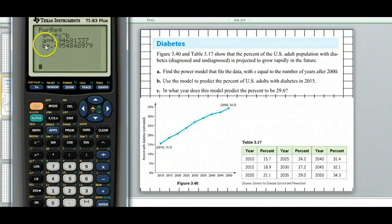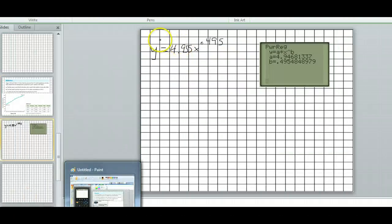So I'm going to put this on the next screen. If I'm going to do it to three places, this should be 4.947x to the, this is a decimal point, .495, that's the power. Now the second part, that's part A.